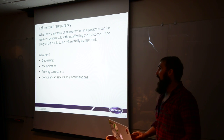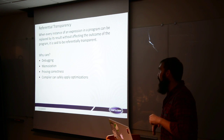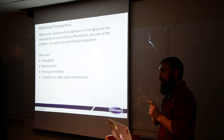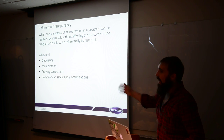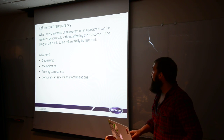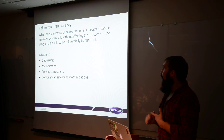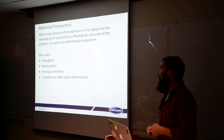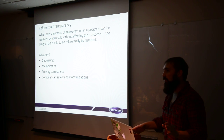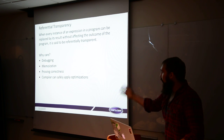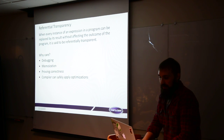Referential transparency means that when you have multiple instances of the same expression in your code, if you can replace all of those expressions with their results everywhere and the code runs in the exact same manner, then that expression is referentially transparent. Why do we care? We can memoize our results, it helps greatly with debugging programs, and it helps with testing. In some functional programs, you can almost get the tests to write themselves. You can also prove that your program is correct, and the compiler can apply all sorts of optimizations it otherwise couldn't.